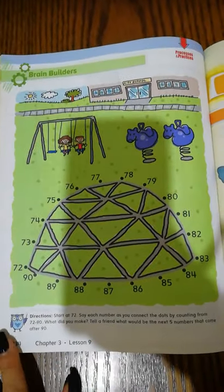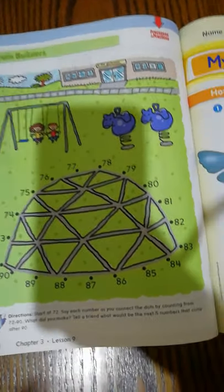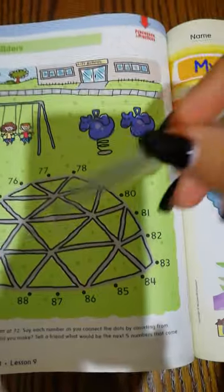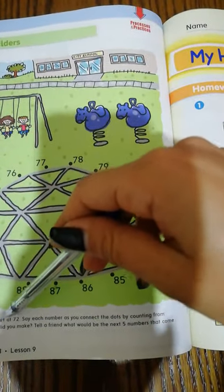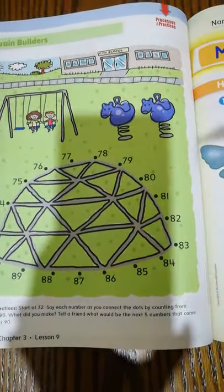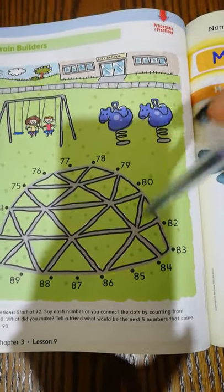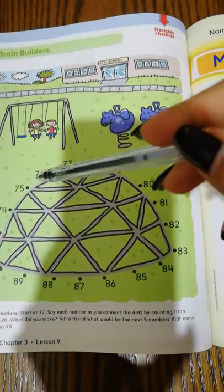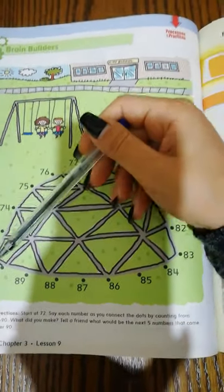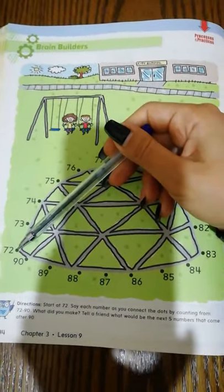Look, we have to start at 72. Let's find 72 together. Where is 72? We have a picture to finish. And we have to start at 72. This is 72.